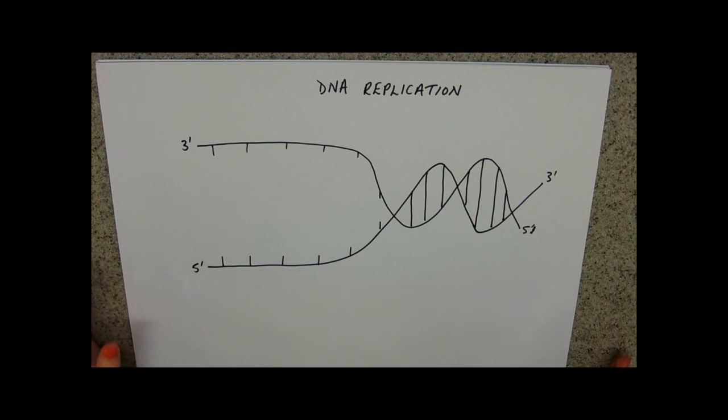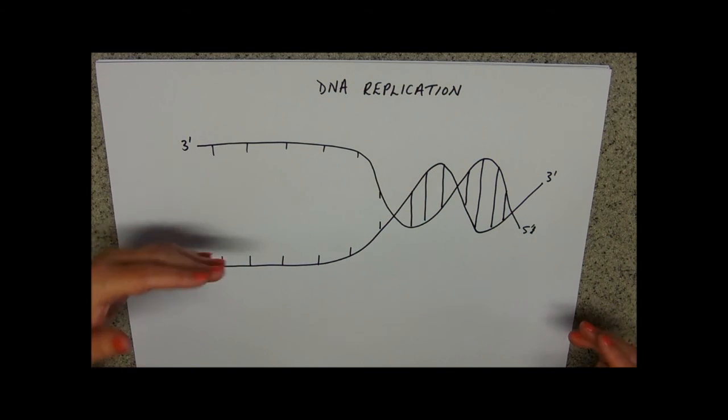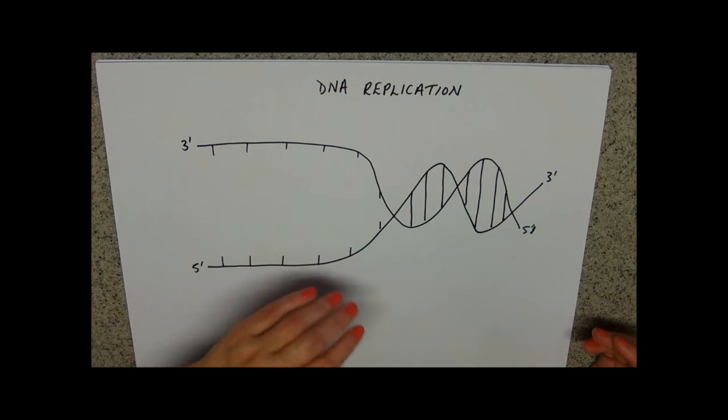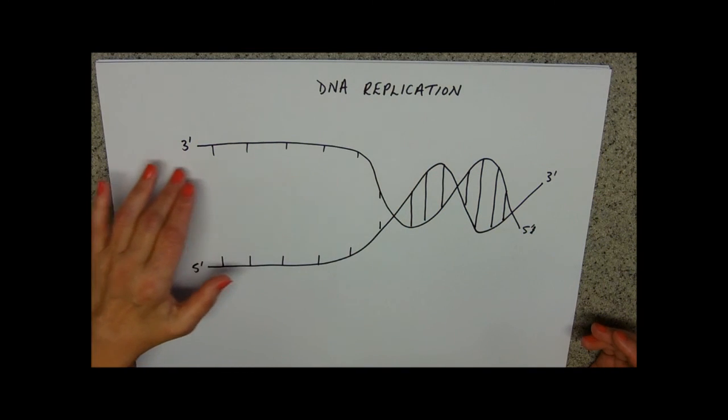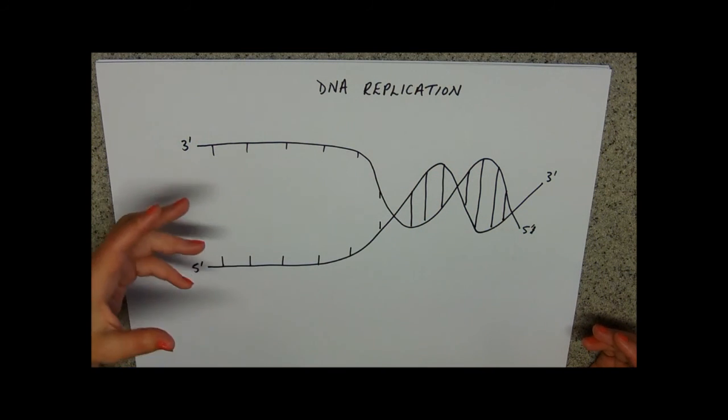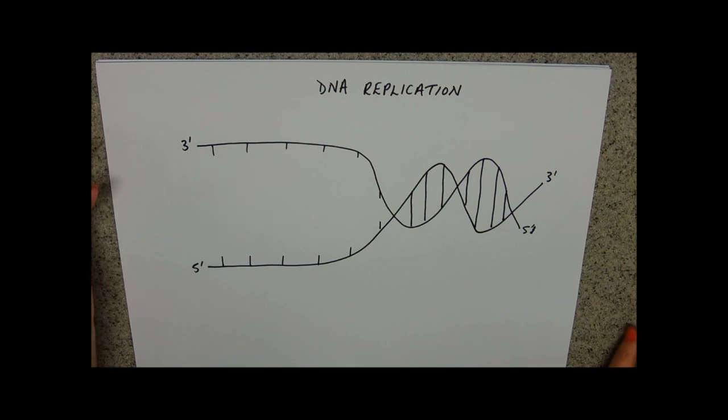We know from the Meselson and Stahl experiment that DNA replication happens semi-conservatively. That means the molecule breaks into two strands by breaking through the hydrogen bonds and their new complementary nucleotides are attached by their complementary base pairings to each of the template strands.